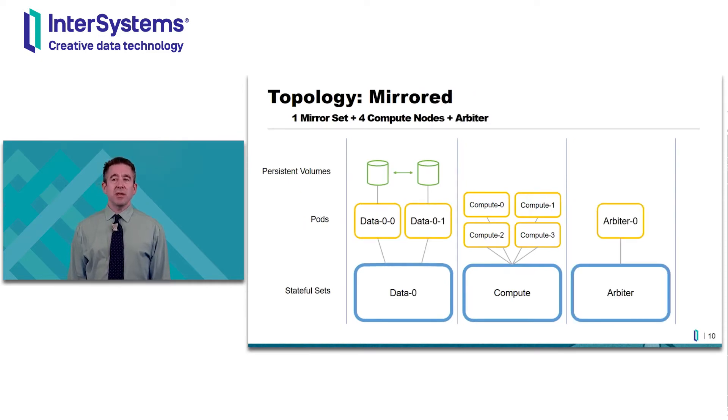This cluster consists of two data nodes comprising a failover pair, four compute nodes and an arbiter. Note that with mirroring enabled, the stateful set has its own numbering scheme, allowing us to have multiple failover pairs without names colliding. I'll use this topology to illustrate a couple of upgrade scenarios, and this is the type of cluster we'll use for the demo.